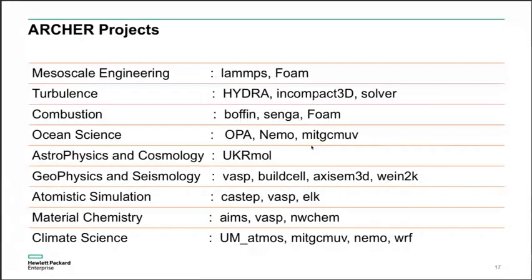These are the nine big project areas in Archer. Mesoscale engineering is LAMPS, OpenFOAM, and more CFD. Turbulence is all CFD. Combustion includes applications like Boffin and Senga. Ocean science and climate science are also represented. Astrophysics and cosmology, seismology — which uses applications like SPECFEM and Bill Cell — atomistic simulation with applications like CASTEP and VASP, and material chemistry. VASP is a very popular application that runs a lot on Archer. Let's see how these projects use Archer.